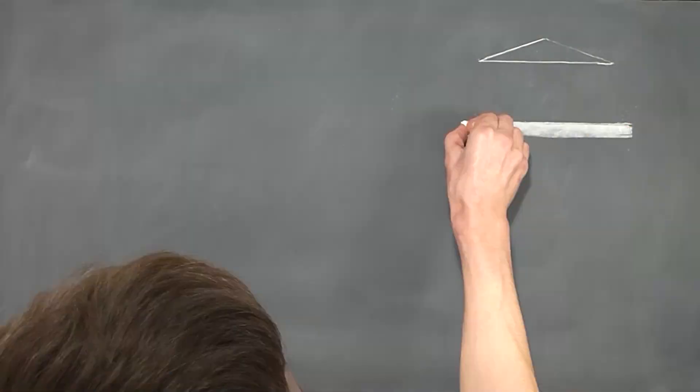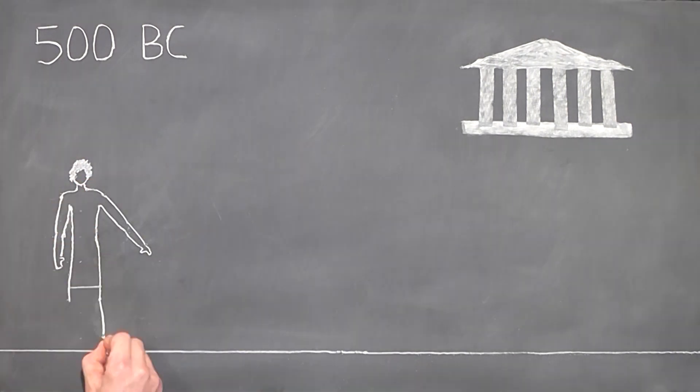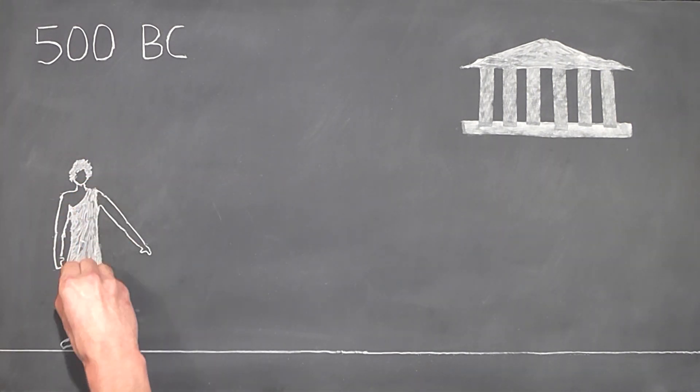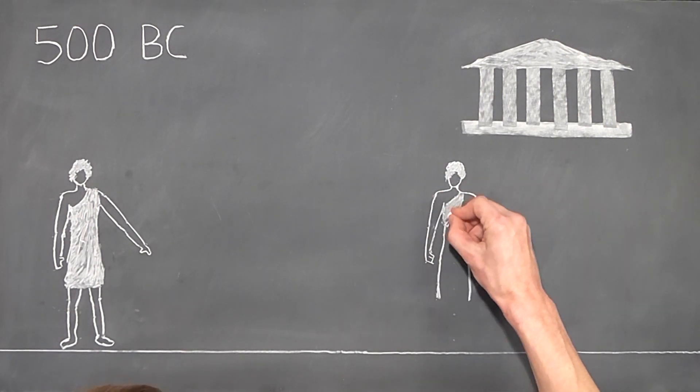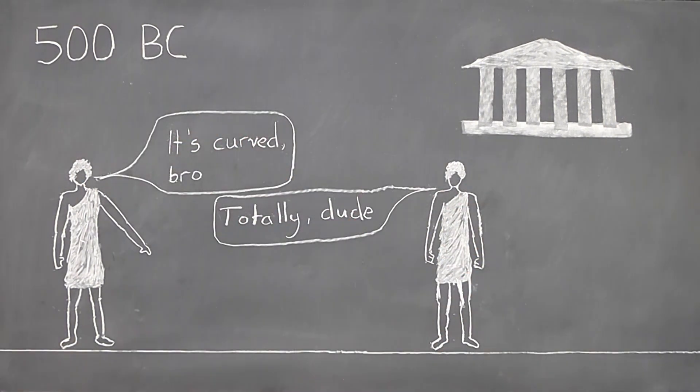But still, even using only our limited senses, figuring out the correct shape of the earth is still possible. We know this because the ancient Greeks figured it out, sometime around 500 BC, using reasons and observations available to people for as long as we've existed.